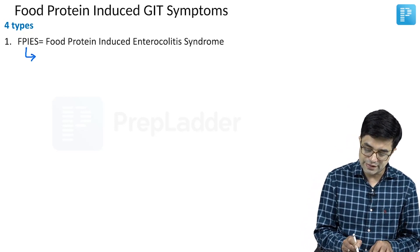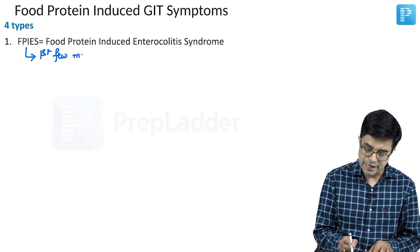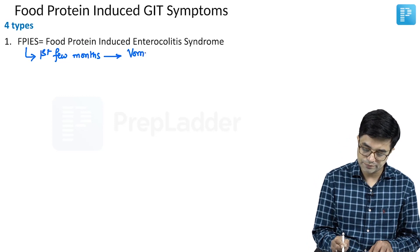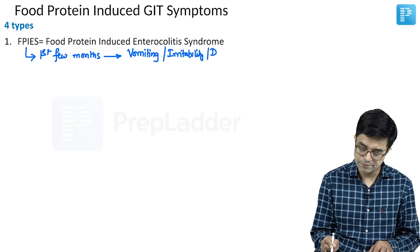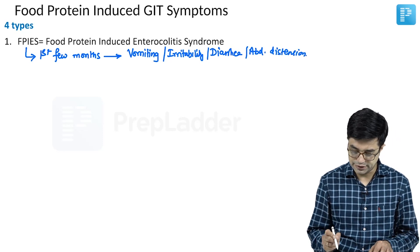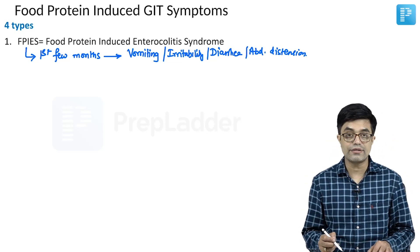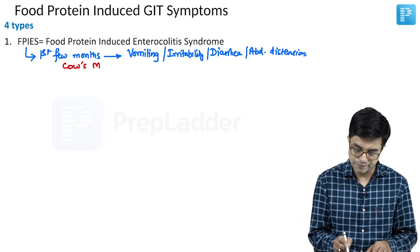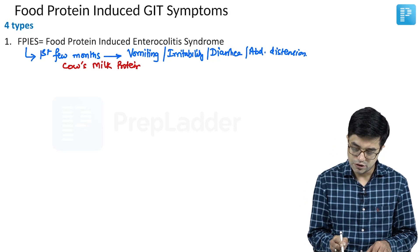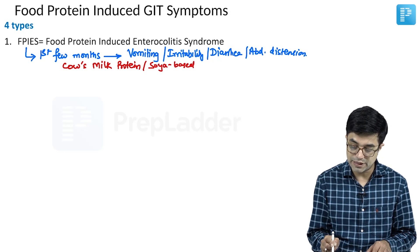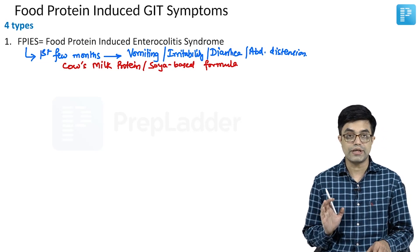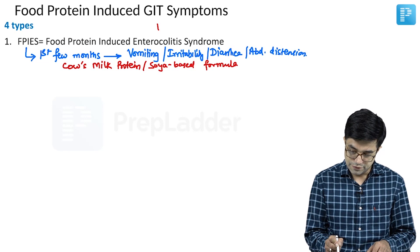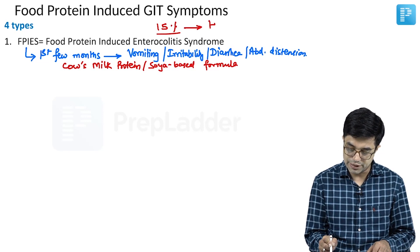FPIES usually manifests in the first few months of life, and these children present with features of vomiting, irritability, diarrhoea and abdominal distension. These are the predominant symptoms. The common food allergens responsible are often difficult to identify exactly, but in many patients cow's milk protein or soya based formulas given instead of breast milk are responsible in the majority. Nelson states that about 15 percent of these children may also develop hypotension.